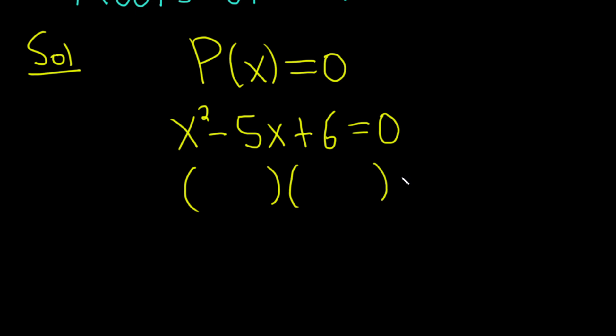So if it factors, we can say that this is x and this is x, and that should work because x times x is x squared.